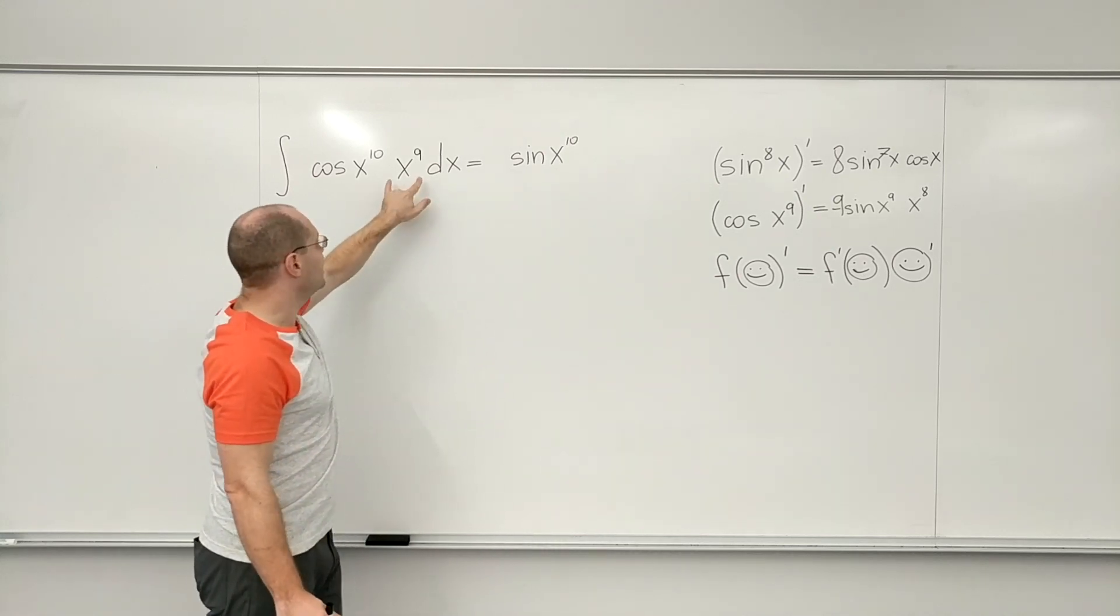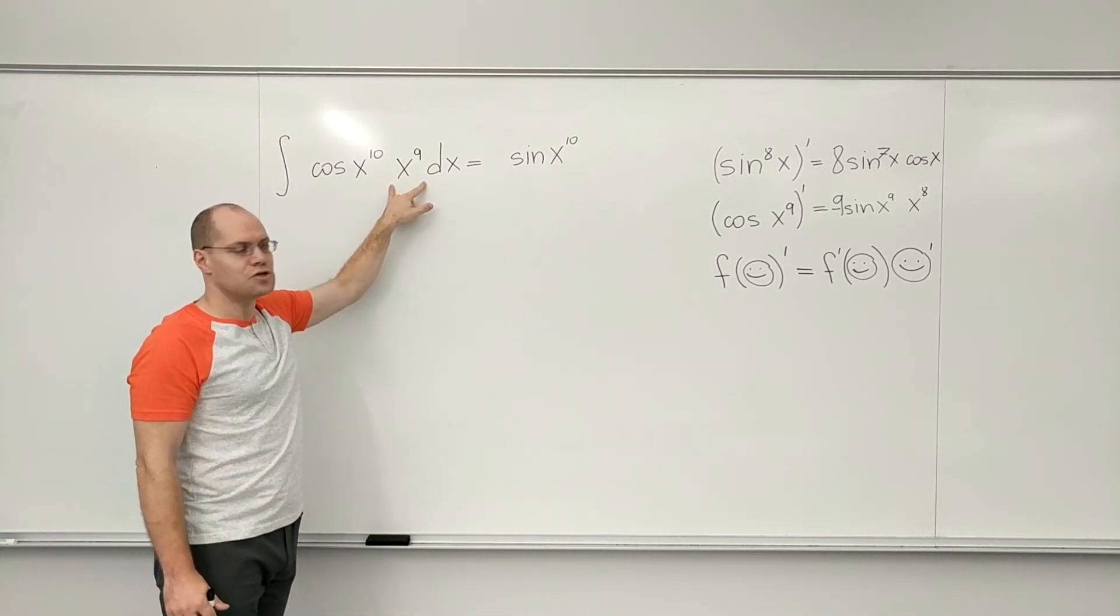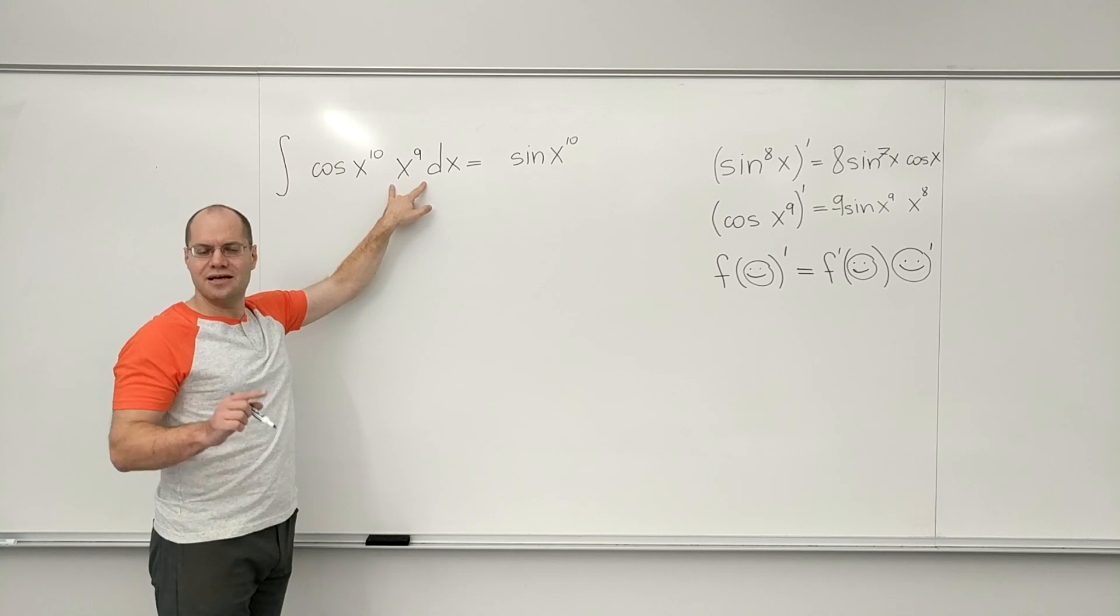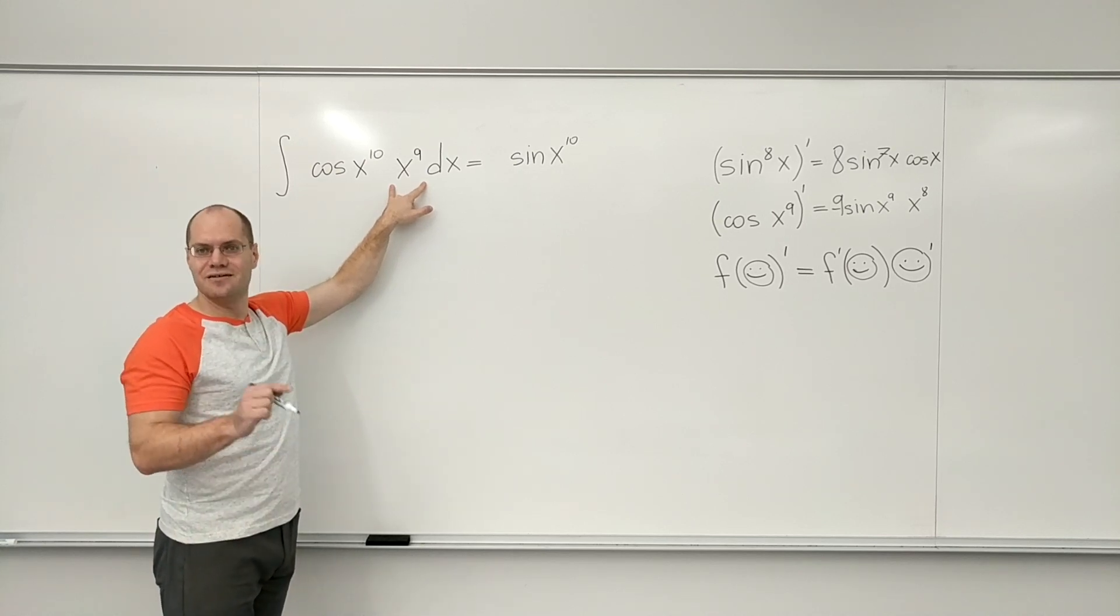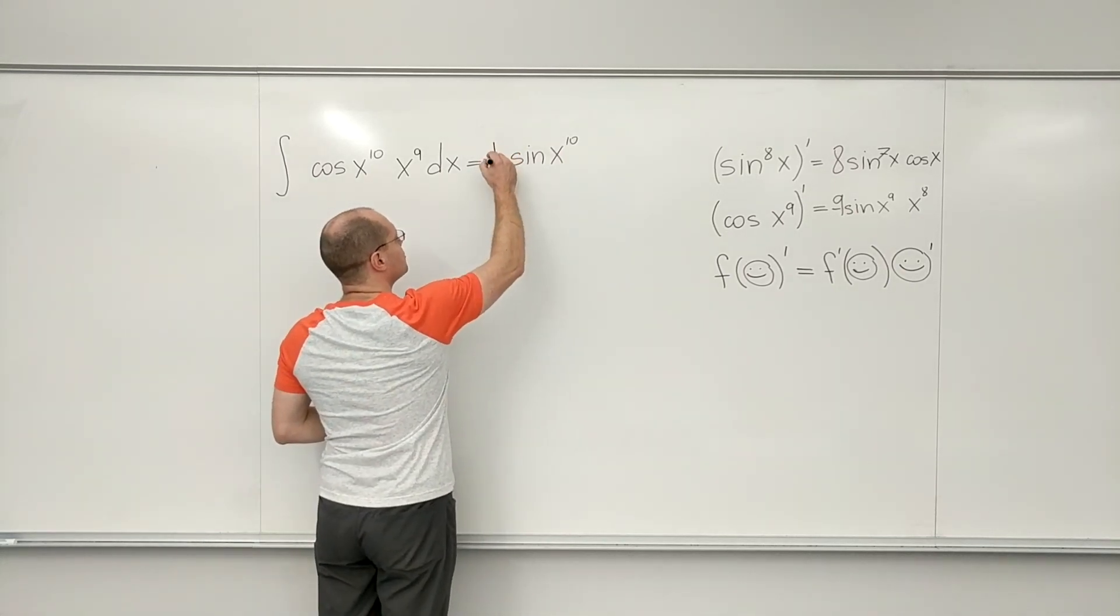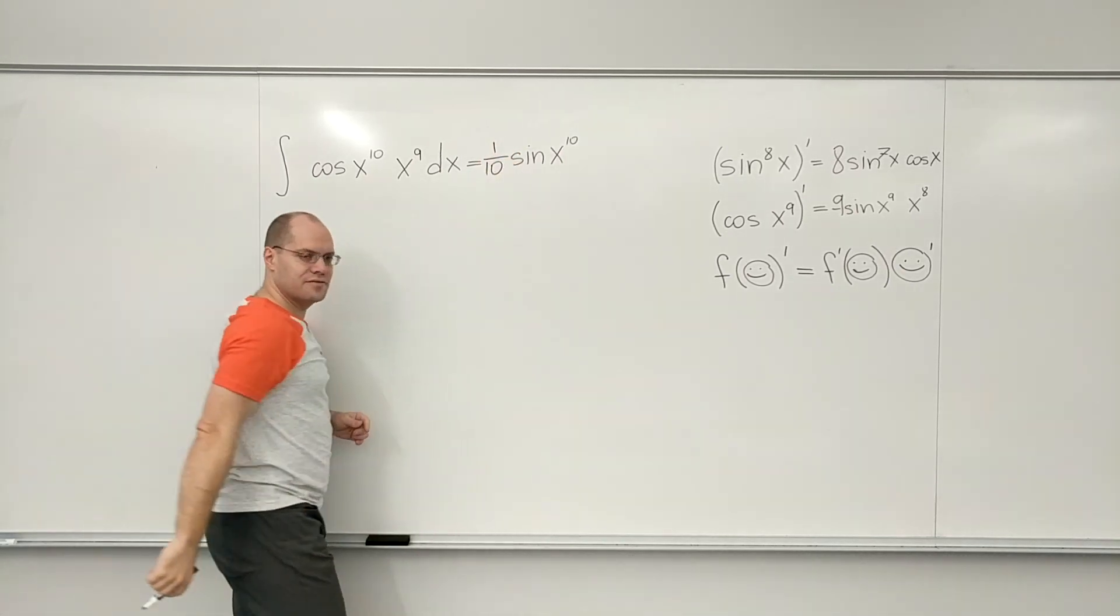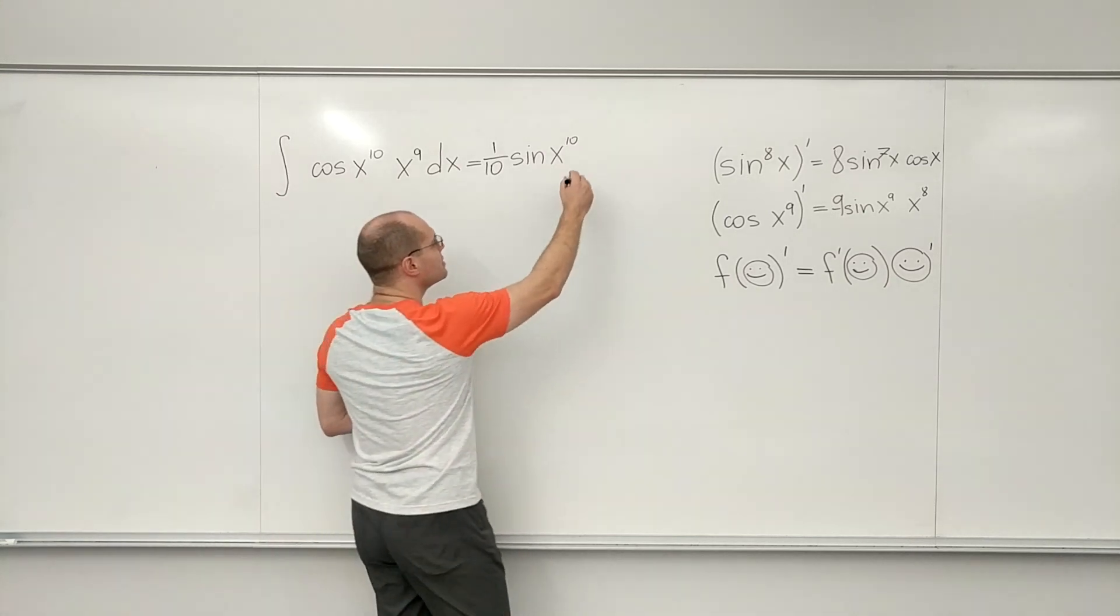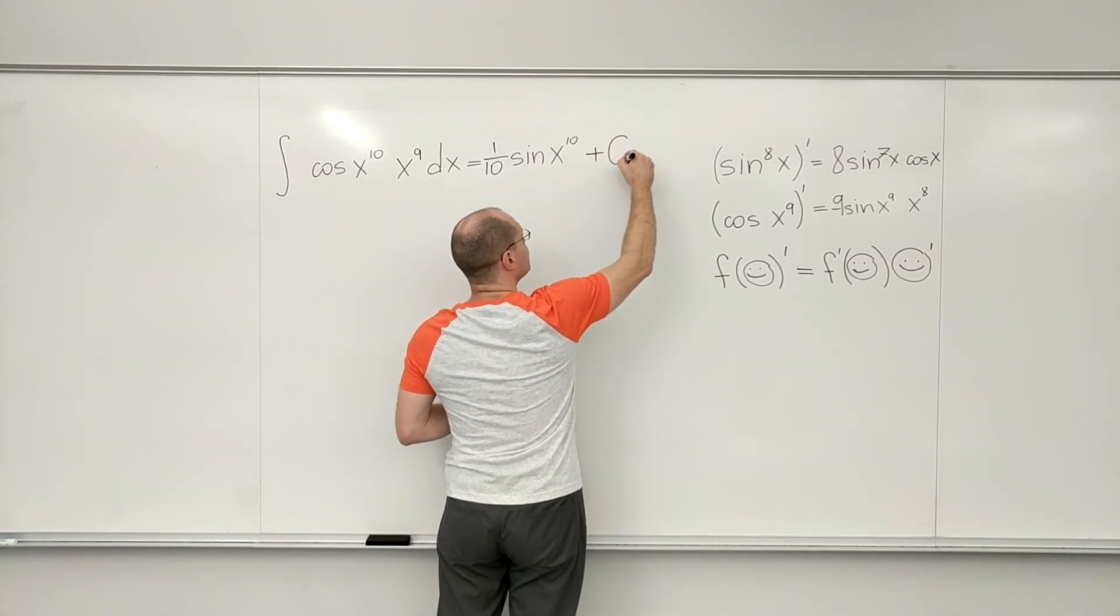And my target was x to the ninth. So I'm basically hitting my target, except I'm a factor of 10 off from what my intended target was. So to make up for it, I have to put in a factor of one tenth. And we're done, except for the constant of integration. Does that make sense?